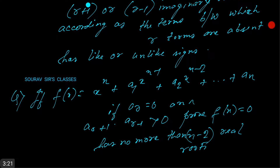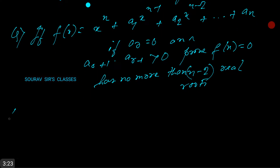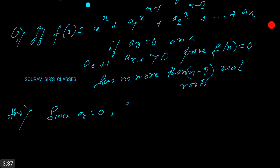The answer: since aᵣ is 0, f(x) = 0 is an incomplete equation. The coefficient of the terms preceding the vanishing term aᵣ and following it, namely aᵣ₋₁ and aᵣ₊₁, must satisfy the given condition.